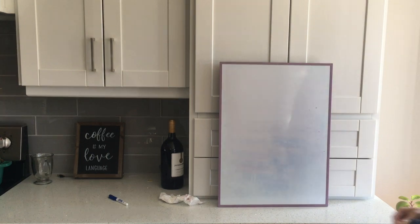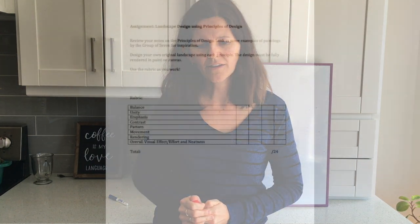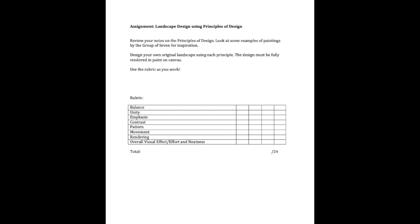That is the first part of your assignment - two parts: you're painting the painting, and second, you're writing how each of the principles of design is being used. When that's done, you have a second assignment called Landscape Design Using Principles of Design. You're going to design your own landscape painting, work out a good design, and make sure it uses all six of the principles - a clear focal point with good emphasis, good unity, good contrast, and a nice path for the eye to move through. You're being marked for how you use each of the principles, how the paint is used, and how it looks overall.